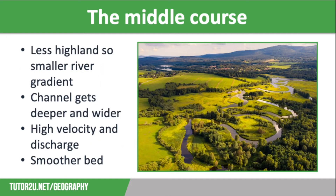In the middle course the relief of the land is lower, with fewer mountains and hills, so the gradient of the river reduces. Along this section the channel gets deeper and wider, and tributaries join the main river meaning lots of extra water joins the channel, so velocity and discharge are both quite high. The riverbed is smoother than the upper course and sediment is smaller and less rough. Erosion begins to erode laterally or sideways into the valley sides, with less vertical erosion, meaning that the valleys are wider.